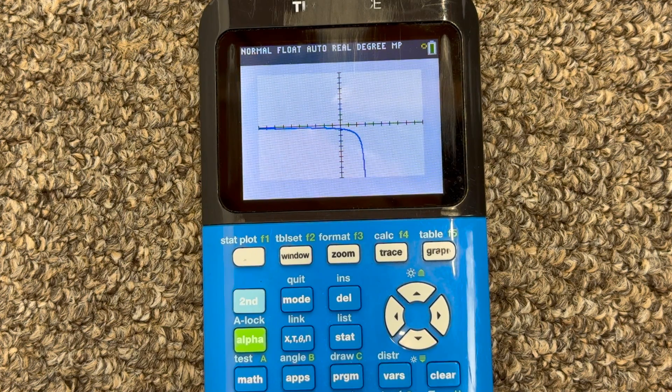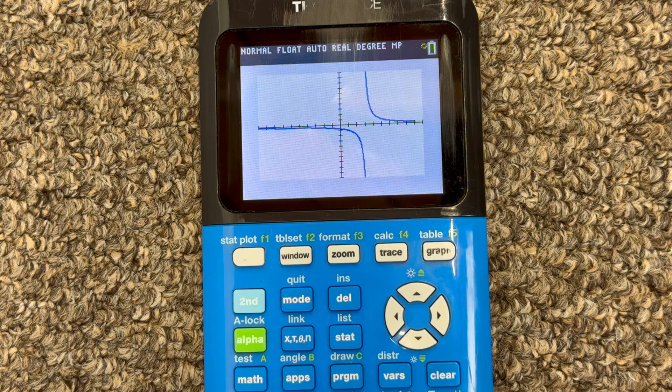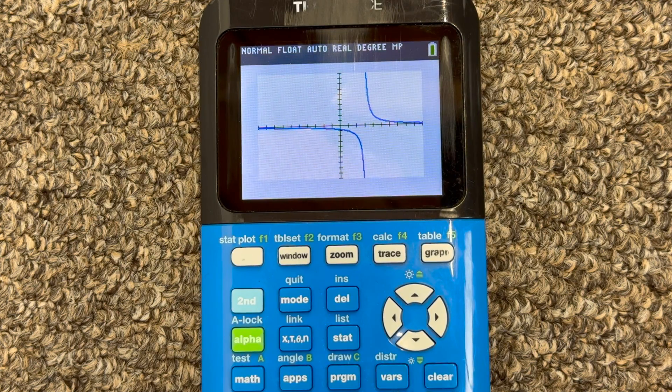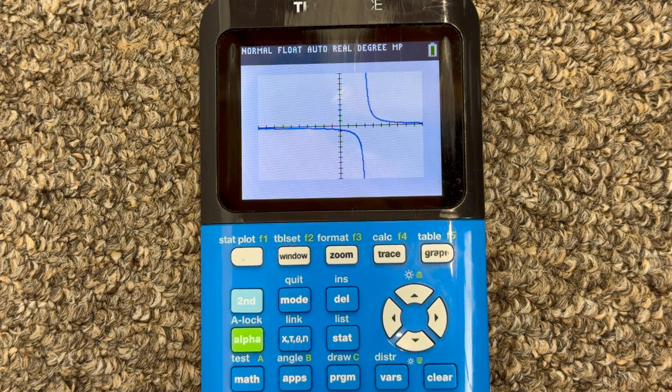You'll notice that there is a vertical asymptote at three, X equals three. And you got it. So I hope that helped you understand how to type fractions on the TI-84.